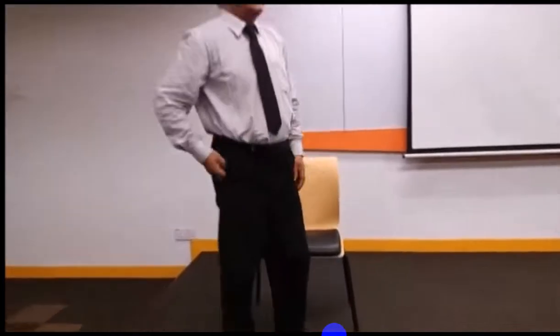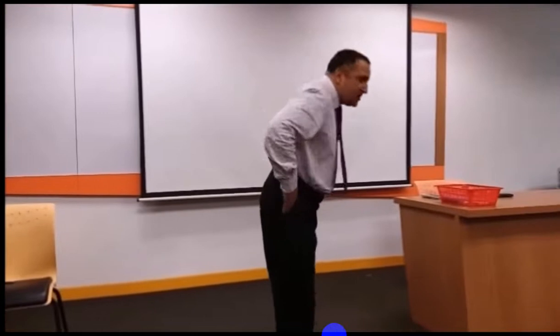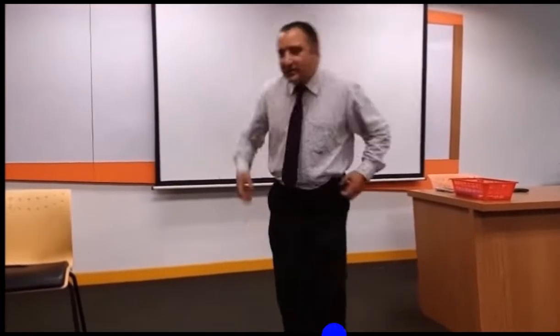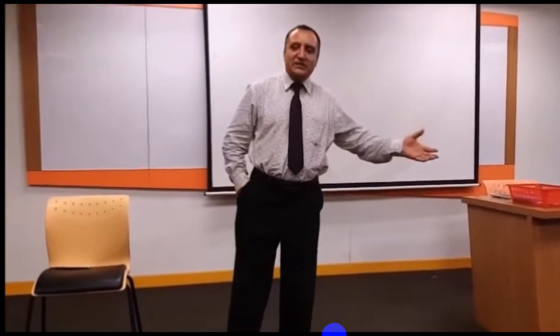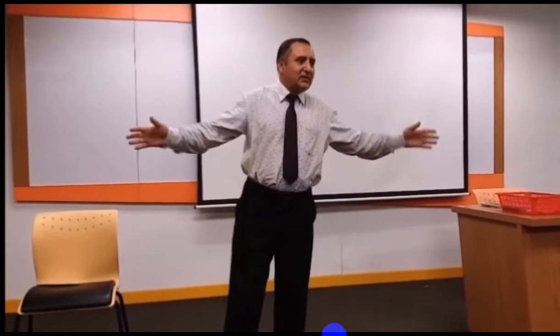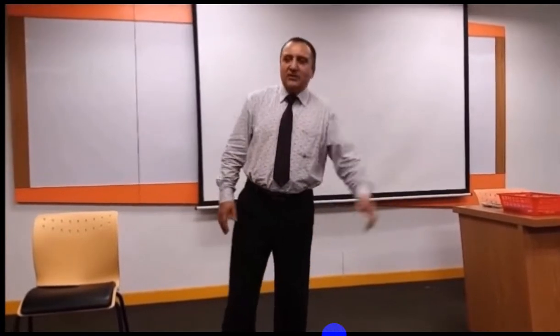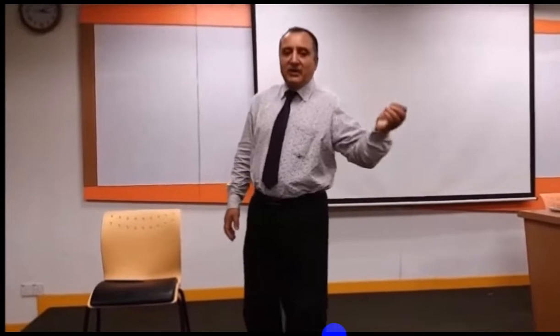We don't have smooth movement, we don't have normal balance, we don't have normal posture. Normally a posture should be quite upright and one should walk normally. In this patient, the trunk is not straight. All three forms are disturbed: balance is disturbed, posture is disturbed, movements are disturbed. That is the hallmark — the main feature of cerebellar disease.